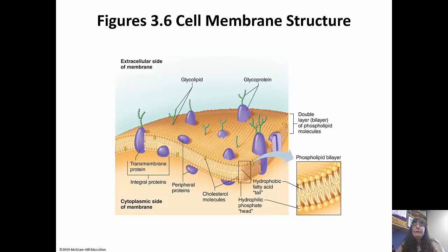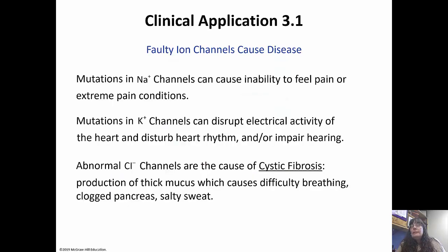You can also have transmembrane proteins or peripheral proteins. Transmembrane proteins span the entire phospholipid bilayer from top to bottom. Peripheral proteins, on the other hand, just hang out on the surface on one side or the other. Some of these can cause problems.